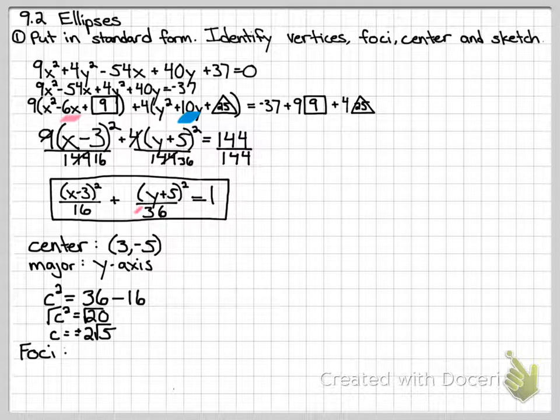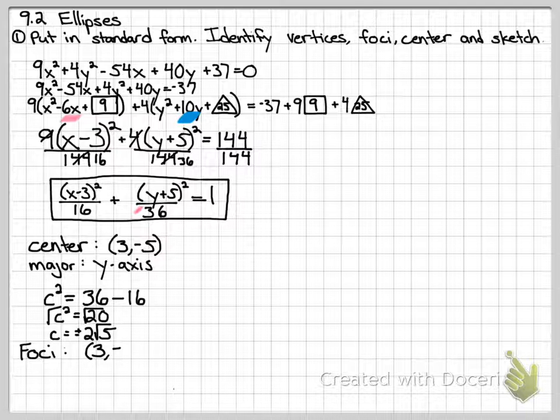So trying to find the foci. We know that the major axis is the y axis, so that means the x value isn't going to change. Your foci and your vertices slide up and down the major axis, so the x value is going to be the same. So my foci is going to be at 3 comma. One of the foci is going to be a little lower than the center, so negative 5 was the center value of my y, and a little lower means it's the minus 2 root 5 c value. That's one of my foci.